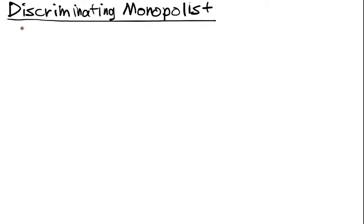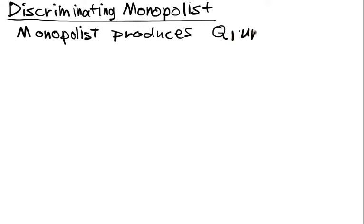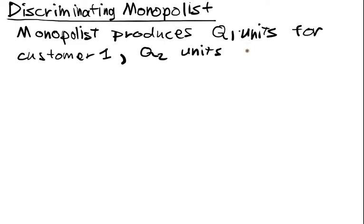Let's look at an example where we're actually going to check the second order conditions. So let's suppose that we have a monopolist producing Q1 units of whatever good they have a monopoly on for customer 1, Q2 units for customer 2.